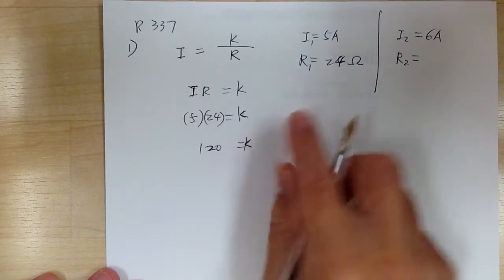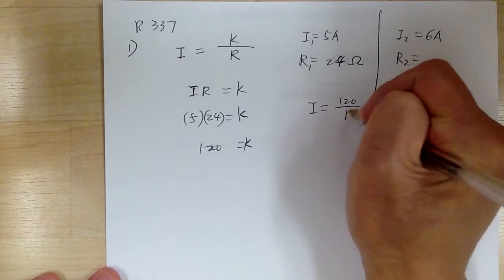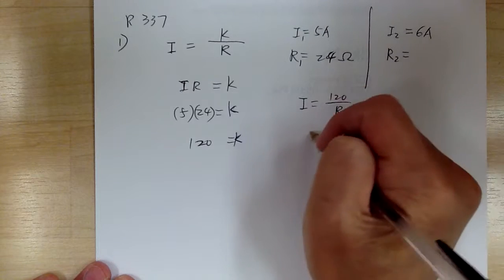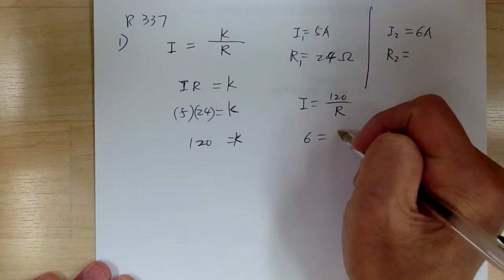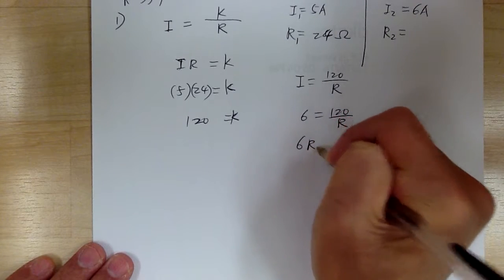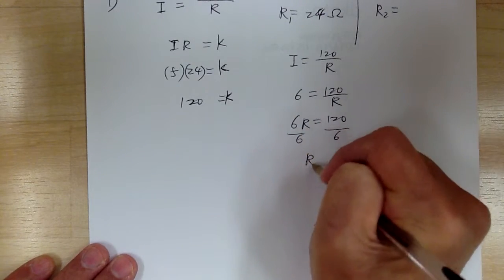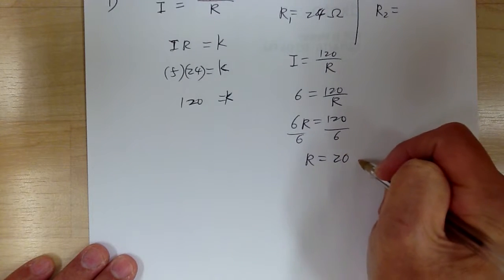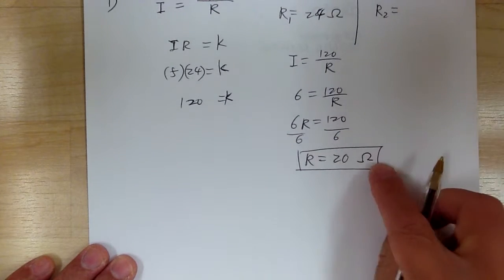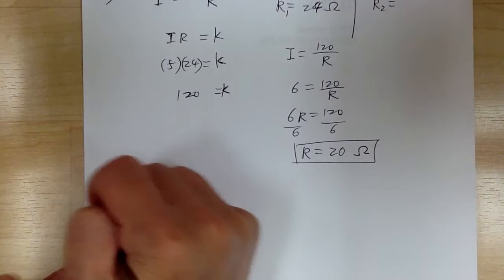As soon as you find k, you substitute to update your equation. So I equal to 120 over R. So now to find R, you can substitute using the new equation. So 6 is equal to 120 over R. Cross multiply. 6R equal to 120. Divide by 6. So R equal to 20. And the unit would be omega, it's the upside down horseshoe. So make sure to remember your label.